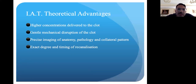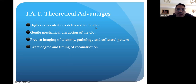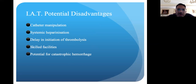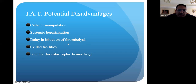For intra-arterial treatment, you need access to the femoral artery — usually the most common access — or occasionally the carotid artery directly. The goal is to increase the concentration of medicine delivered directly to the clot, minimizing systemic effect. You can disrupt the clot and use imaging and collateral patterns to determine when and where to use intra-arterial therapy. Problems include catheter manipulation increasing hemorrhage risk, systemic heparinization also raising hemorrhage risk, potential delays in initiating thrombolysis, and the need for both skilled facilities and skilled operators.